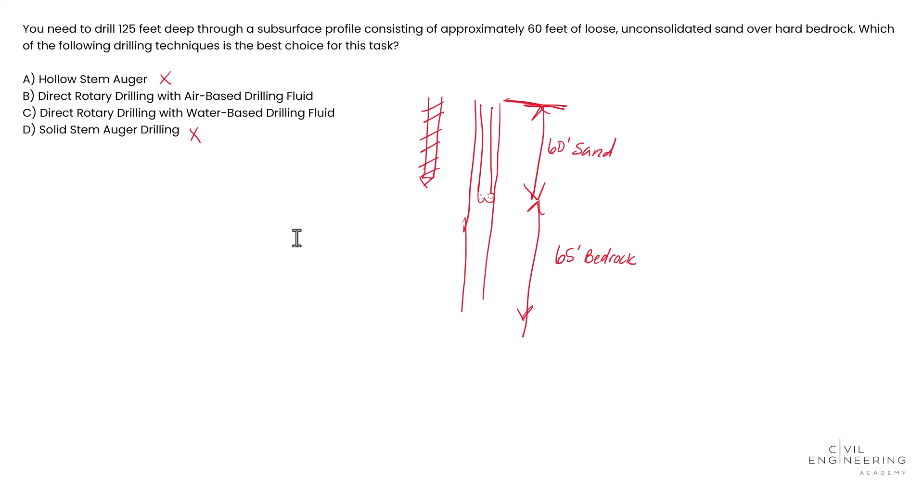Next one is direct rotary drilling with air-based drilling fluid. So if we have air-based drilling fluid, if we're thinking about this and we're drilling down, air gets shot down into this. Well, if we're coming through the sand layer, we could have these massive blowouts that happen on this thing as we go through the sand layer, which is not good if we're using air. That's, it's going to cause some stability issues in the loose sand, which leads to potential blowouts.